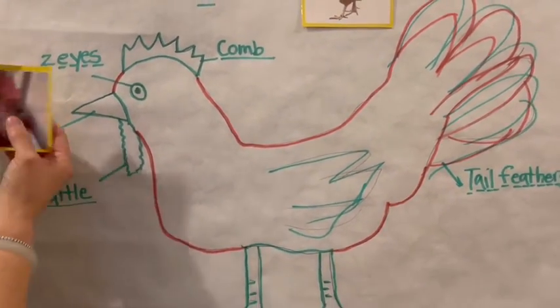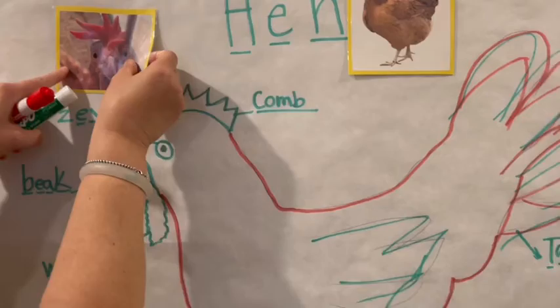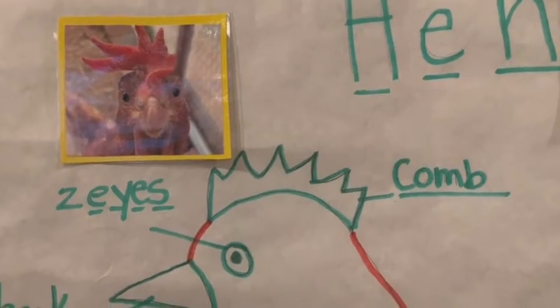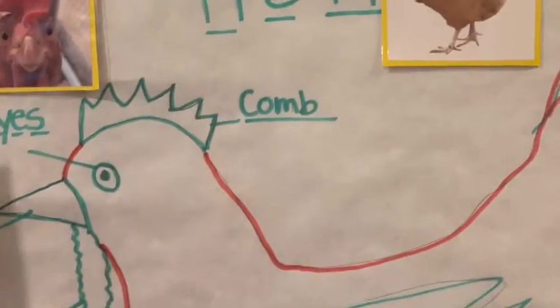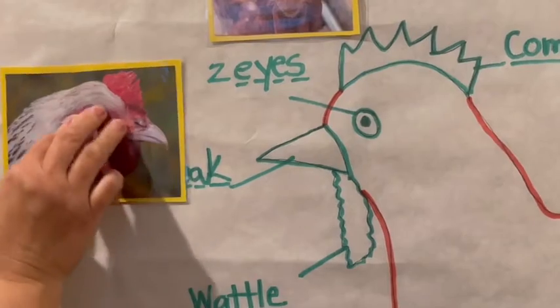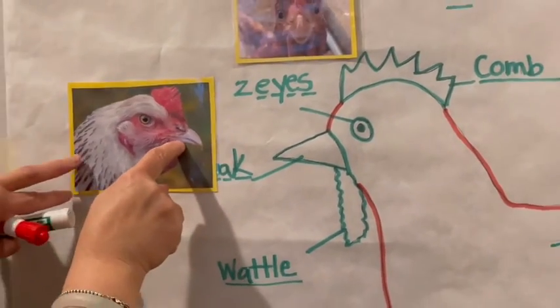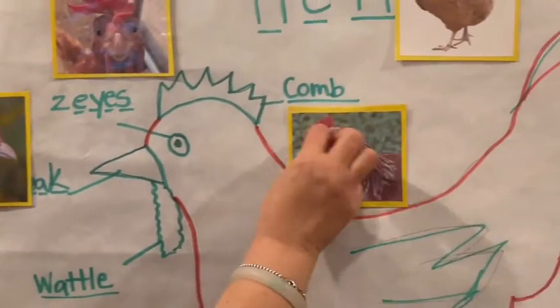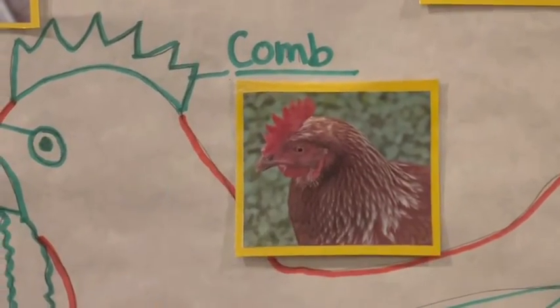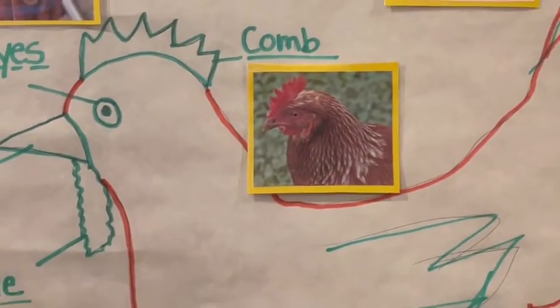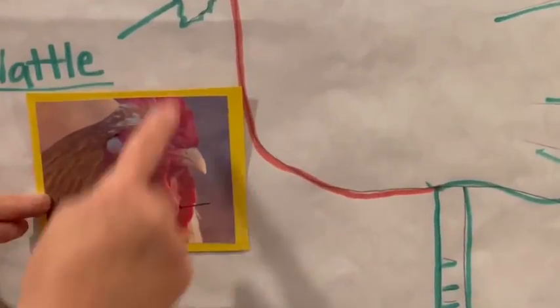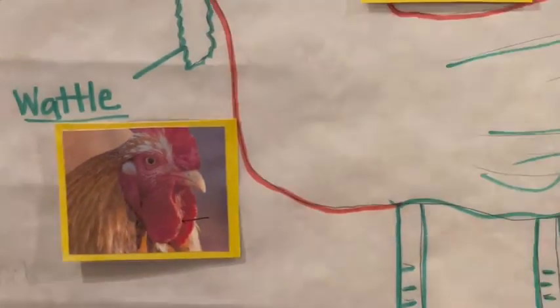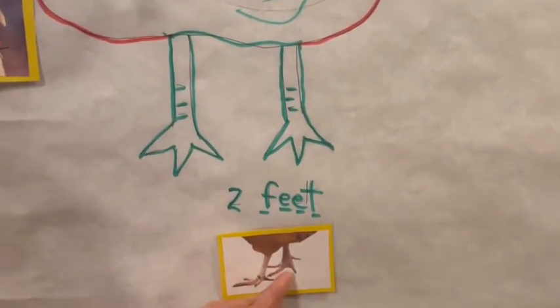Here are the hen's two eyes, one, two. Here is the beak, little beak. Here is the comb. Here is the funny little waddle that hens have, and there are two little feet.